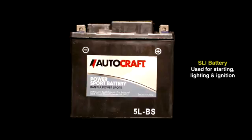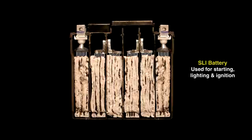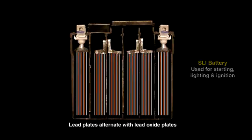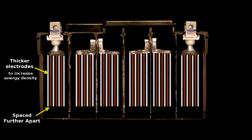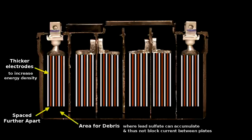To convert an SLI battery, like used to start a motorcycle or a car, into a deep cycle battery, we do three things. We use thicker electrodes to increase energy density, space them further apart so lead sulfate debris can fall off of them, and add room below where that debris can accumulate. The trade-off is that it's larger, heavier, and gives off a lower current than a car battery.